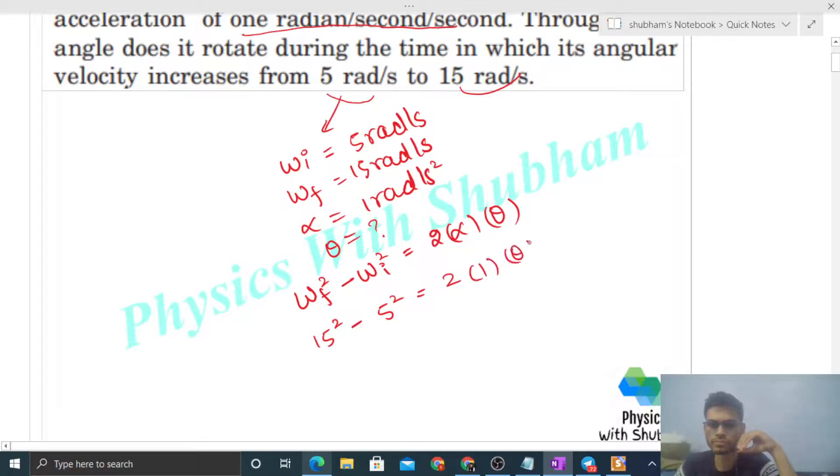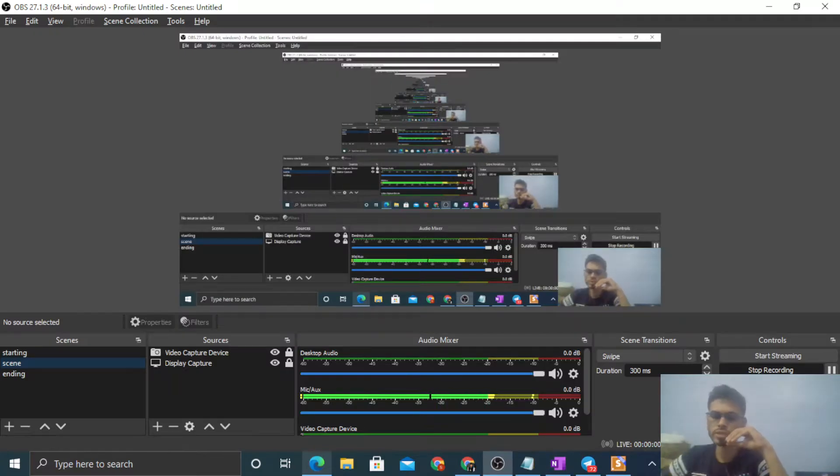So from here you will get the value of theta as 200 by 2, which is 100 radian, right? So pretty simple. I think you have understood. Let me know if you still have any confusion. We can discuss further.